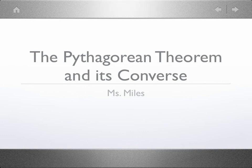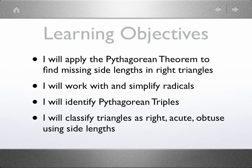Hello, I'm Ms. Miles, and we are going to review the Pythagorean Theorem and its converse. Your learning objectives are that you'll be able to apply the Pythagorean Theorem to find missing side lengths in right triangles, that you'll work with and simplify radicals correctly, that you will identify Pythagorean triples and classify triangles as right, acute, or obtuse using the three side lengths.